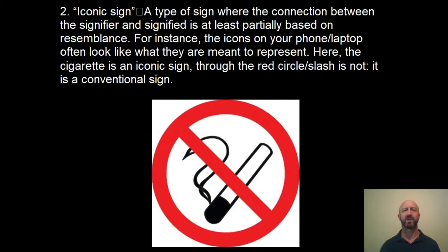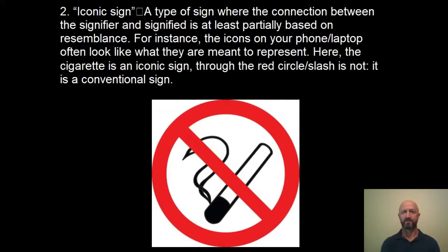Let's talk about a different kind of sign: an iconic sign, where the connection between the signifier and the signified is at least partially based upon resemblance. The icons on your phone or laptop often look like what they represent — if you're searching for how to print something, you see a schematic that looks like a printer. Looking at this no-smoking symbol, the cigarette is an iconic sign: it looks enough like a cigarette that we say 'ah, cigarette' — it resembles the thing it represents, so it is iconic. However, the red circle with the slash through it is not iconic at all. There's nothing about a red circle with a slash that naturally means 'not allowed'; we have to have learned that, making it a conventional or linguistic sign.